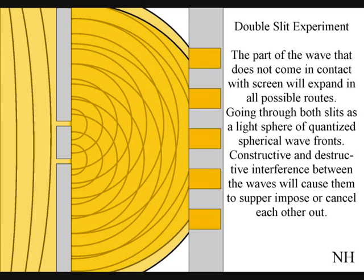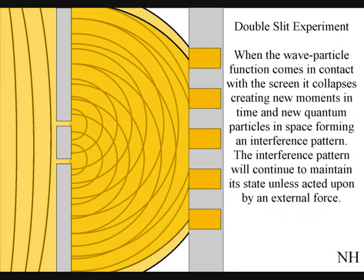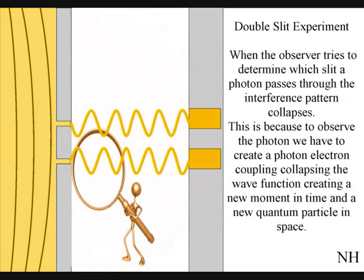When the observer turns on a detector to determine which slit a photon passes through, the interference pattern will collapse. At that moment in time, the interference pattern will disappear, because to observe the photon, we have to physically create a photon-electron coupling, collapsing each wavefront into a new quantum particle that will have its position in space and time that the wavefront never had before the collapse.